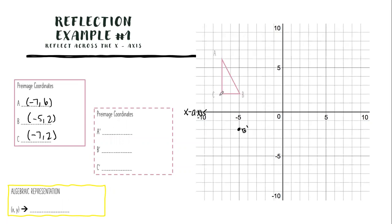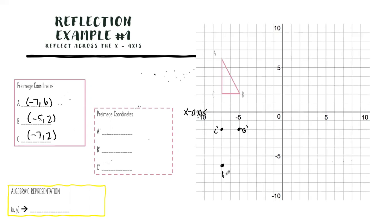Now I go to C. C is also two units away from the x-axis, so C prime is two units going down from the x-axis. Then I do the same with A. A is six units above the x-axis, so it's going to be six units below — one, two, three, four, five, six. So here's A prime.